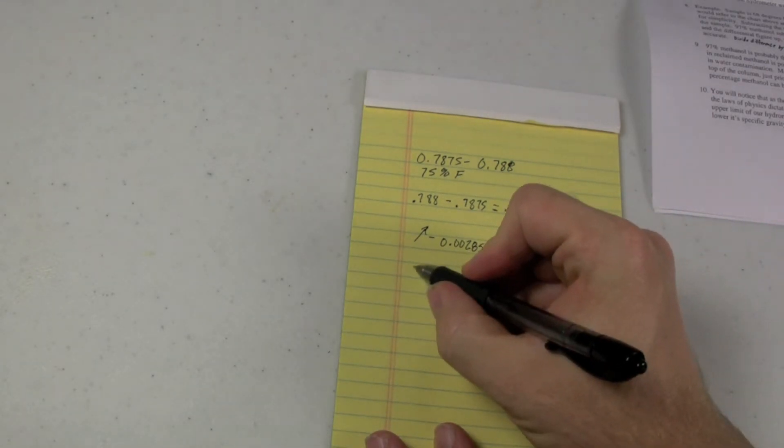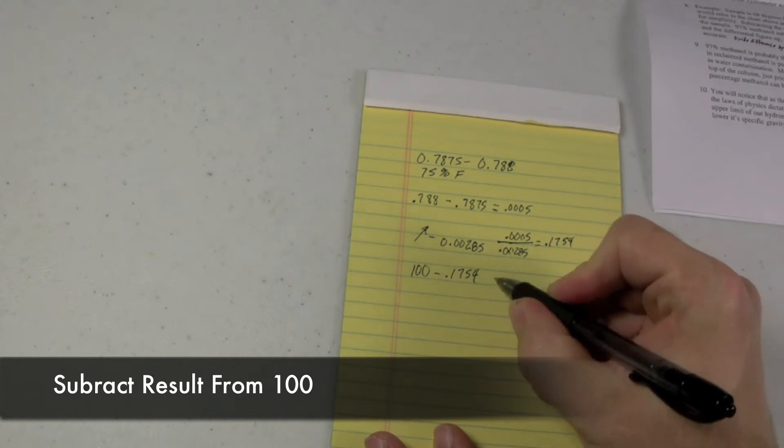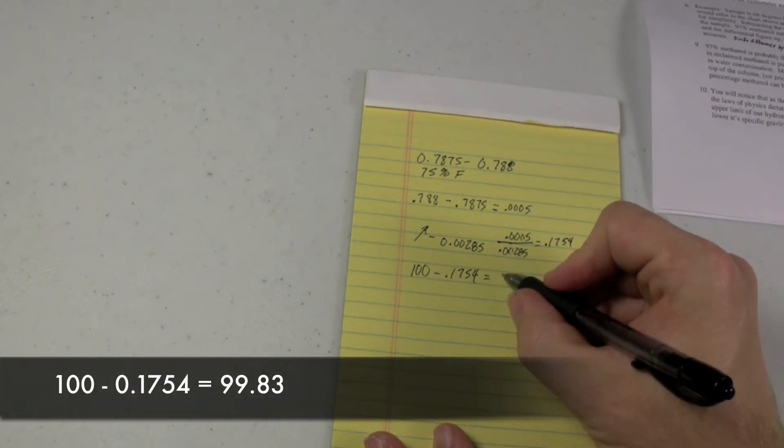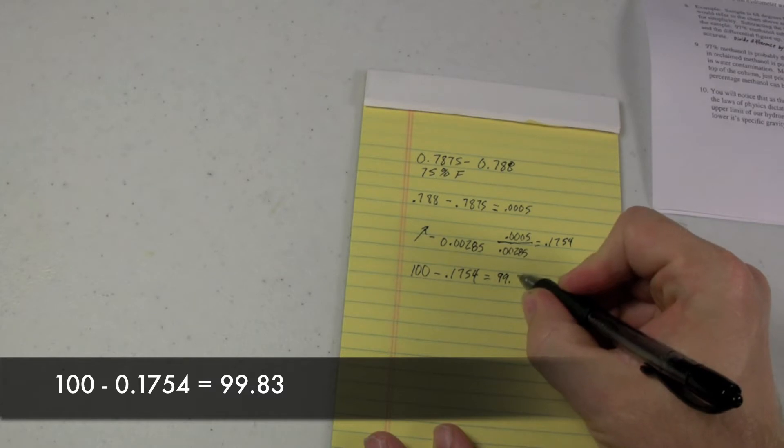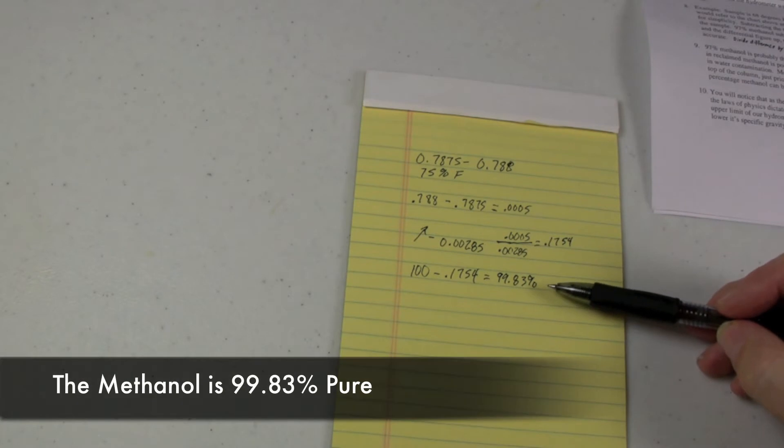We then take 100, and we subtract .1754. That's going to give us 99.83%. So this methanol would be deemed 99.83% pure.